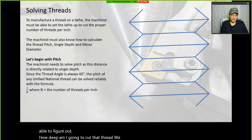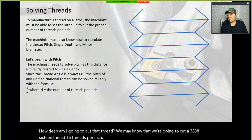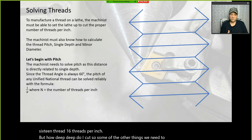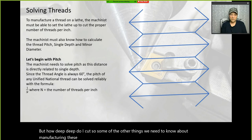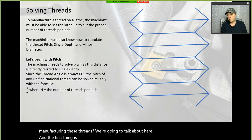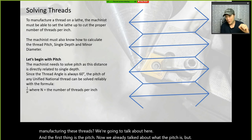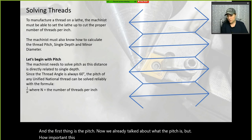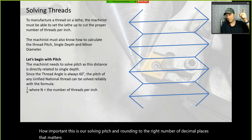We may know we're cutting a 3/8-16 thread at 16 threads per inch, but how deep do we cut? The first thing we need is the pitch. Solving pitch and rounding to the right number of decimal places matters — it's directly related to the depth of the thread.